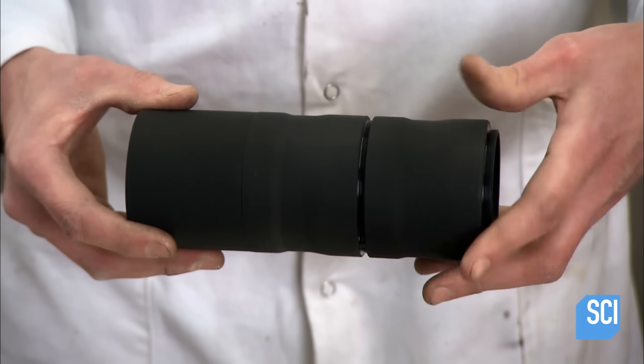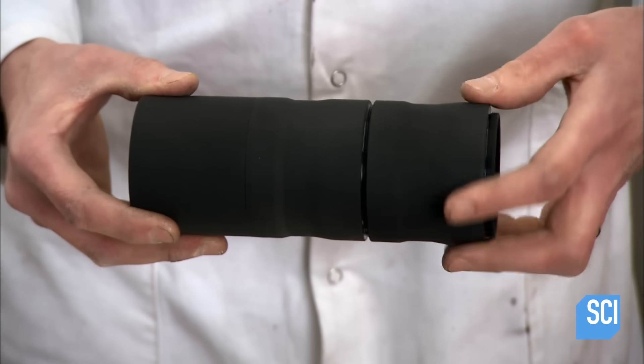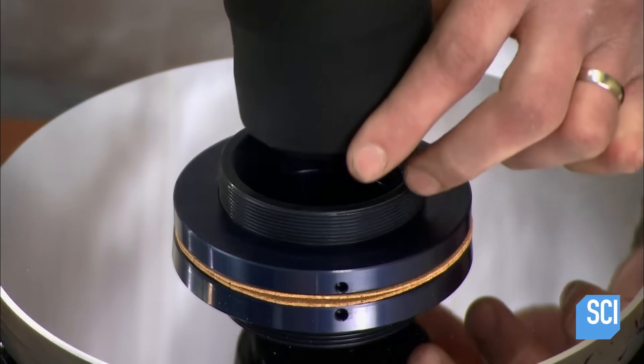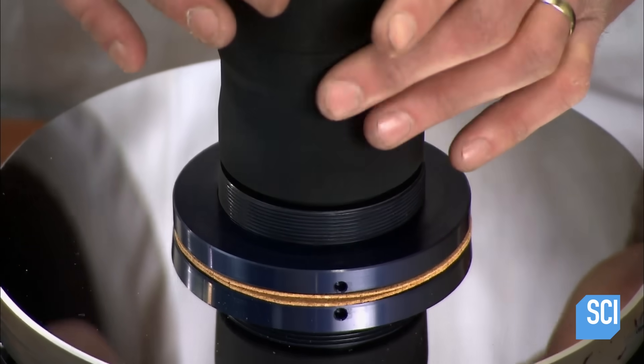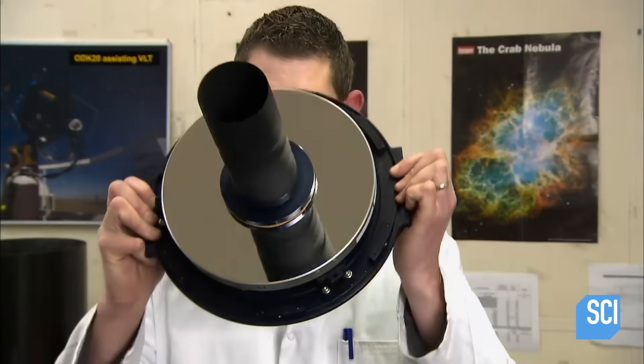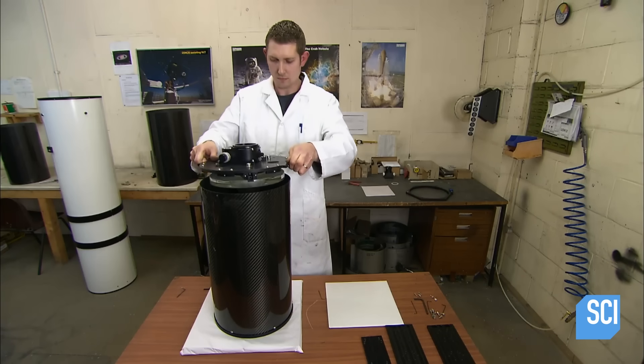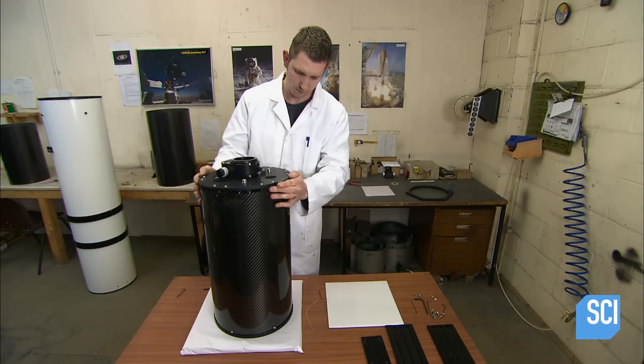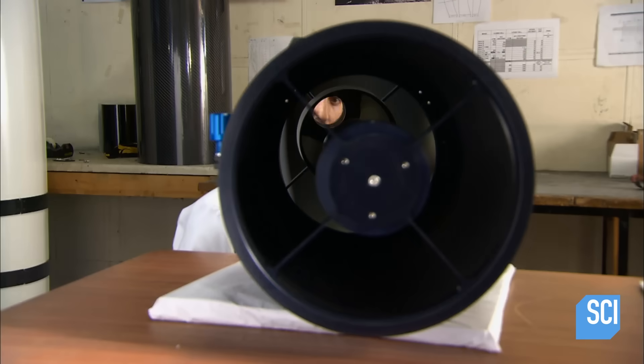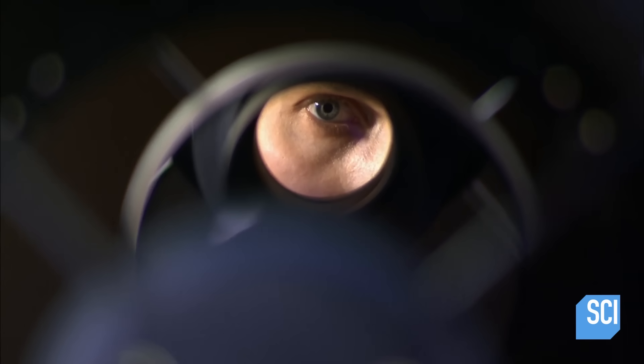He pieces together the three-part baffle, then screws it to the lens holder protruding from the center of the telescope mirror. He joins the baffle and mirror assembly to the telescope tube. The tube has already been equipped with a secondary mirror that will bounce reflected images from the primary mirror back for magnification and viewing.